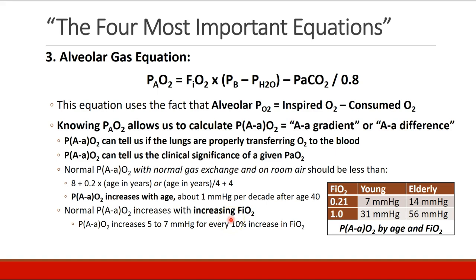As FiO2 increases, the A-a difference also increases — about 5 to 7 millimeters of mercury for every 10% increase in FiO2. So if I put a young, healthy person on 100% oxygen, their normal A-a difference will be more like 30 instead of 7, and an elderly person will be more like 50 or 60 instead of 14 or 15.